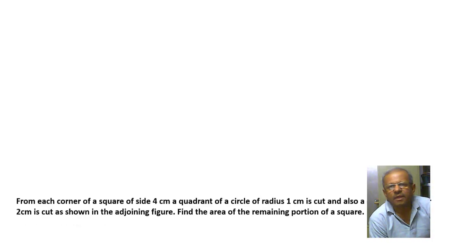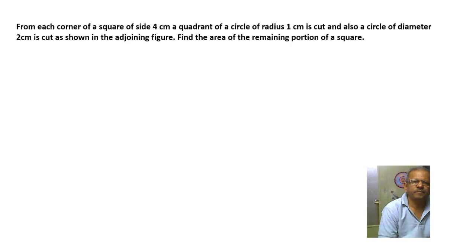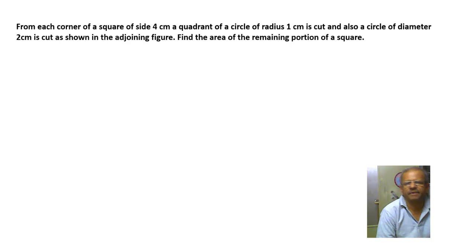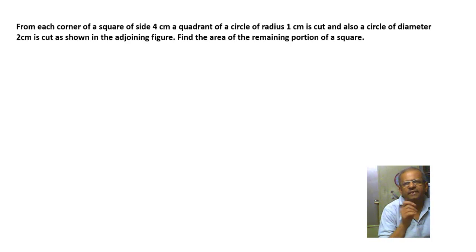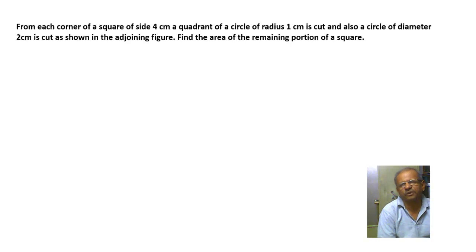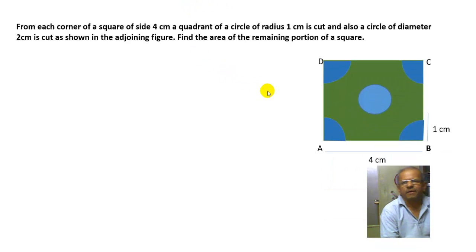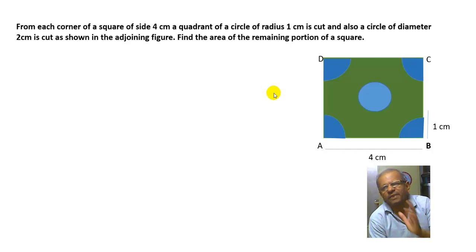Welcome to Mensuration Part 2. Today we will see a few more sums from mensuration. Here is the first question: from each corner of a square of side 4 centimeters, a quadrant of a circle of radius 1 centimeter is cut, and also a circle of diameter 2 centimeters is cut as shown in the adjoining figure. Find the area of the remaining portion of the square.